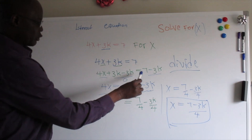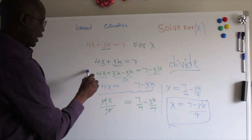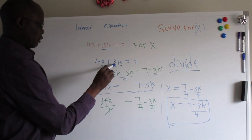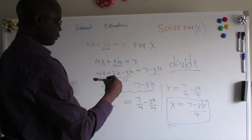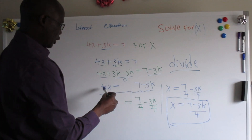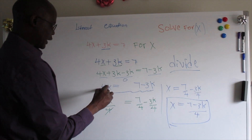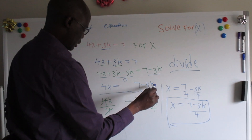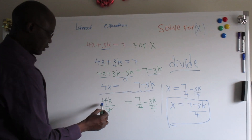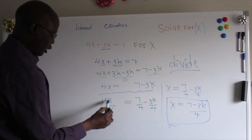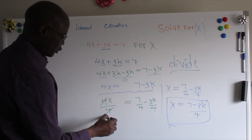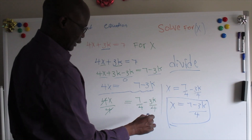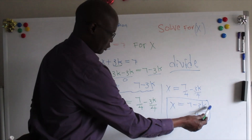What we've done here: we rewrote the equation and subtracted 3k from both sides of the equation. When we simplify, we get 4x equals 7 minus 3k. Then we divide — 4x divided by 4 gives x, and 7 divided by 4 minus 3k divided by 4 — and that is the final answer. Thank you.